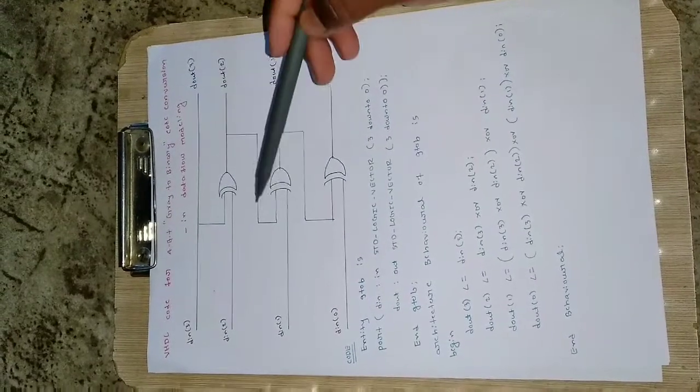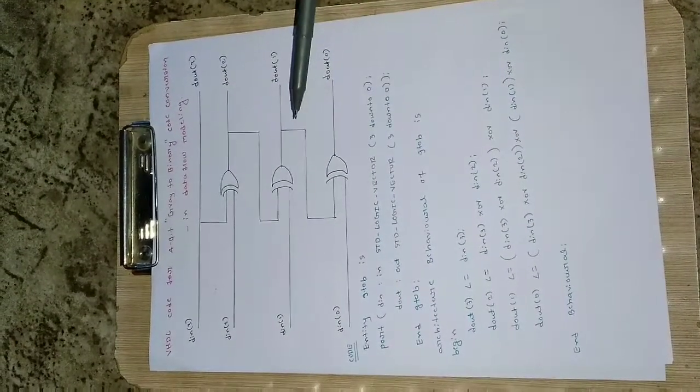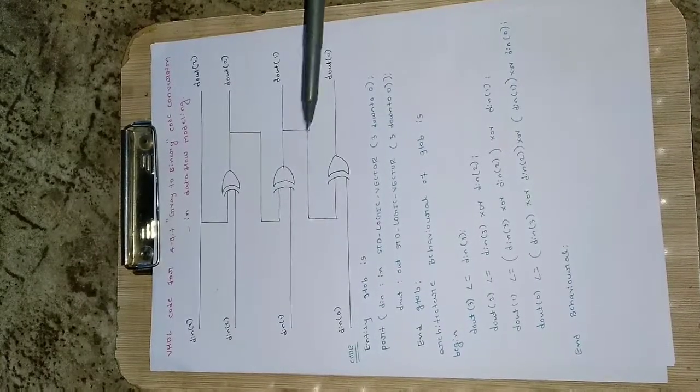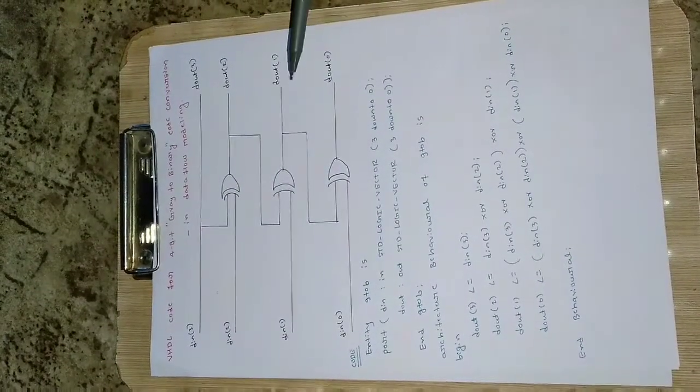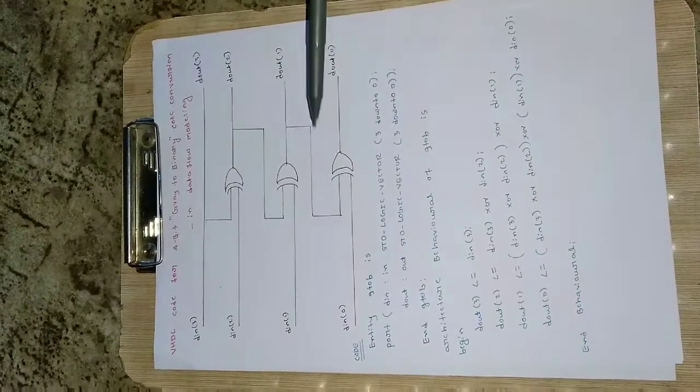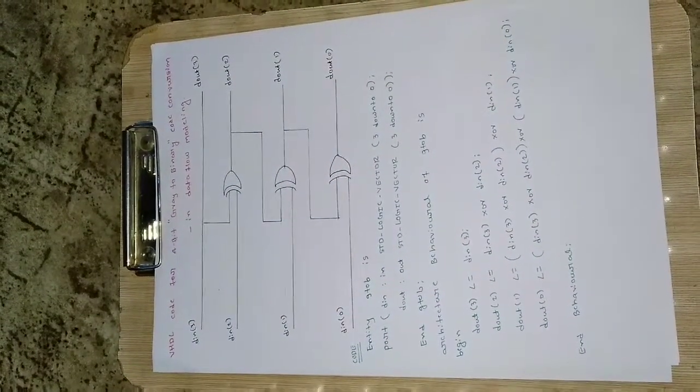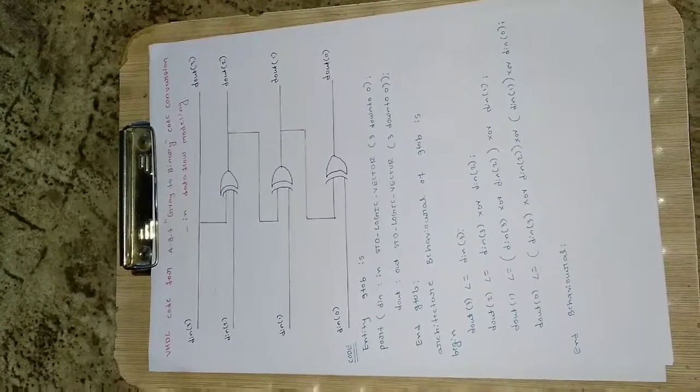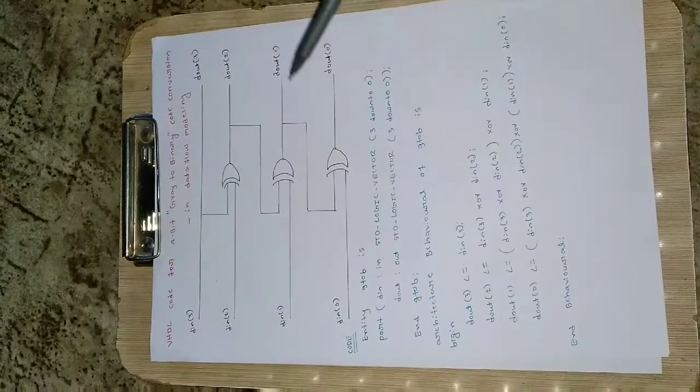D out of 2 is taken again as an input, and for this one D in of 1 will be XORed and given as the output for D out of 1. Again D out of 1 will be used with D in of 0 to give D out of 0 as output here. So as you can see, many outputs are used as input here.